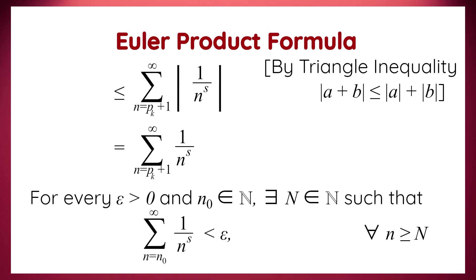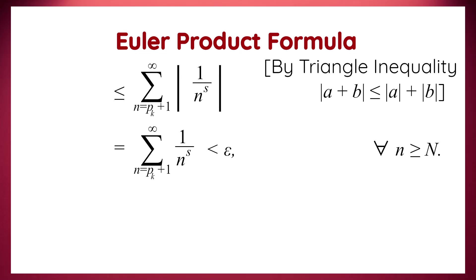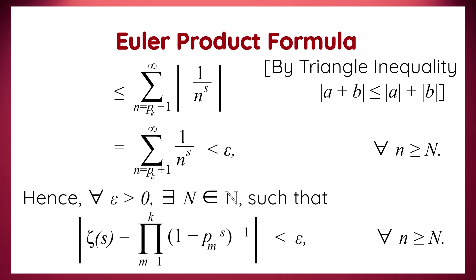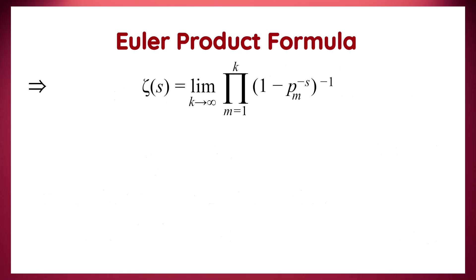Also, at the beginning of this part of the proof, we discussed the convergence of the Riemann zeta series. If we take the natural number N equal to pk plus 1, we get the sum for n from pk+1 to infinity of 1 over n to the power s less than epsilon for each N greater than or equal to N. Hence, for every epsilon greater than 0, there exists a natural number N such that the modulus of zeta(s) minus the product over m from 1 to k of the reciprocal of 1 minus pm to the power minus s is less than epsilon for all N greater than or equal to N. This means zeta(s) converges to the product over m from 1 to k of the reciprocal of 1 minus pm to the power minus s, finally leading to: zeta(s) equals the limit as k tends to infinity of the product over m from 1 to k of the reciprocal of 1 minus pm to the power minus s.